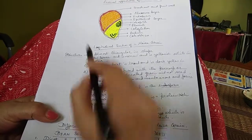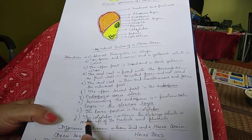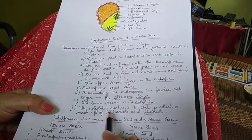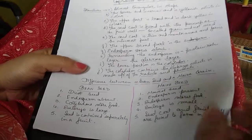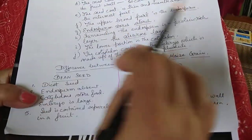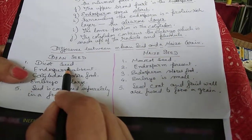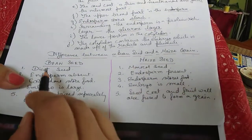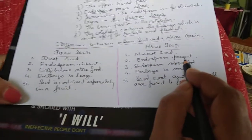Surrounding the endosperm is a protein layer called the aleurone layer. The lower portion is the cotyledon — the yellow portion — which contains the embryo made up of the radicle and plumule. The basic difference: bean seed is a dicotyledonous seed and maize seed is a monocotyledonous seed. In bean seed, endosperm is absent; in maize seed, endosperm is present.